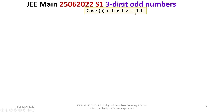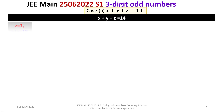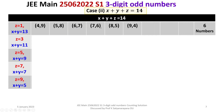Case 2: x plus y plus z equals 14. For z equal to 1, x plus y equals 13. Starting from x=4 (since x=1,2,3 give y>9), the pairs are: 4,9; 5,8; 6,7; 7,6; 8,5; 9,4 — that is 6 numbers. For z equal to 3, x plus y equals 11, starting from 2,9: 2,9; 3,8; 4,7; 5,6; 6,5; 7,4; 8,3; 9,2 — that is 8 numbers.